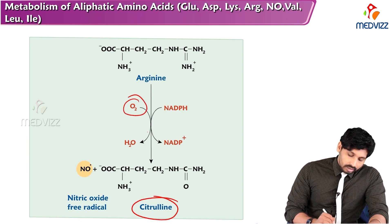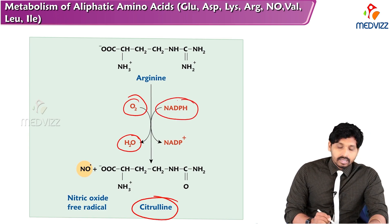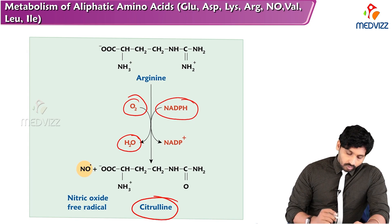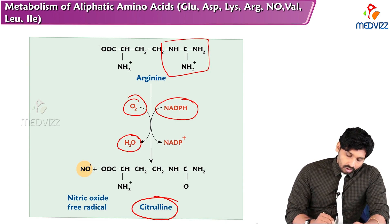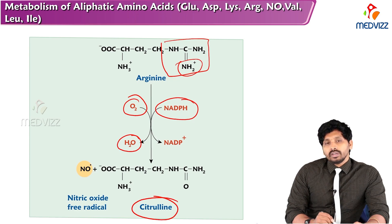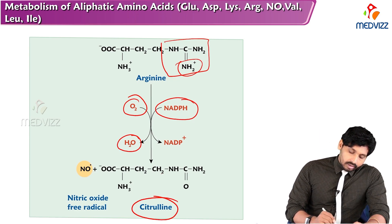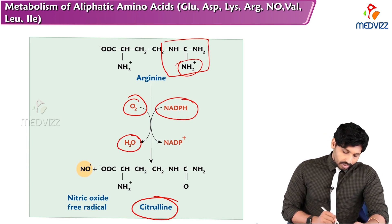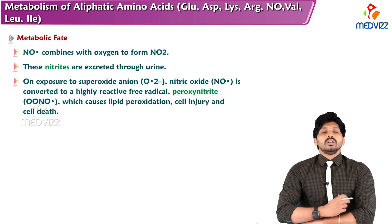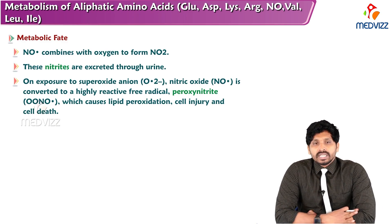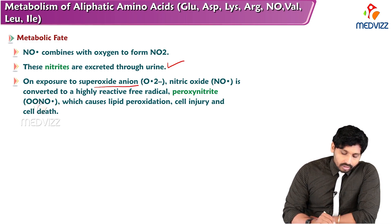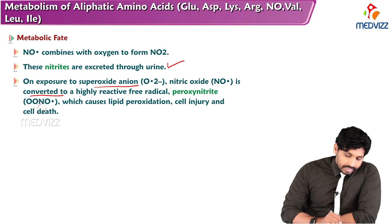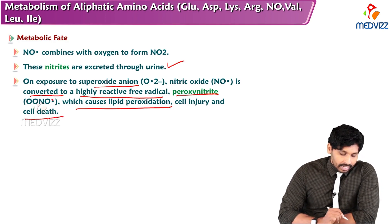Molecular oxygen is involved, releasing a water molecule, and the reaction is NADPH-dependent. In this reaction, arginine — having a guanidino amino group as its functional group — has one amino group removed to form nitric oxide with the help of molecular oxygen. Arginine is converted to citrulline and nitric oxide by an NADPH-dependent enzyme. Metabolic fate: once produced, nitric oxide combines with oxygen to form nitrites excreted through urine. On exposure to superoxide anion, nitric oxide is converted to the highly reactive free radical peroxynitrite, which causes lipid peroxidation, cell injury, and cell death.